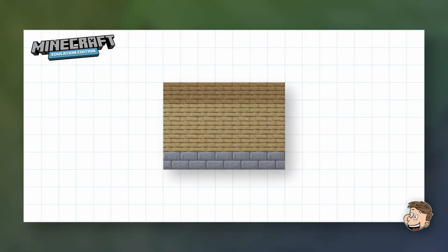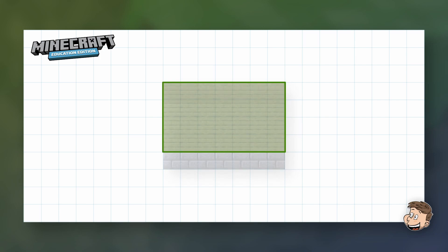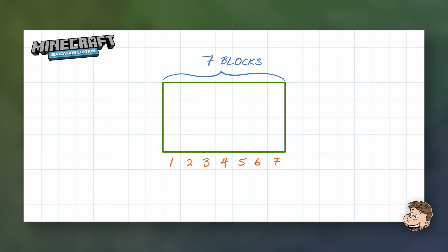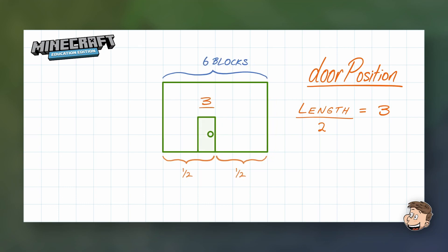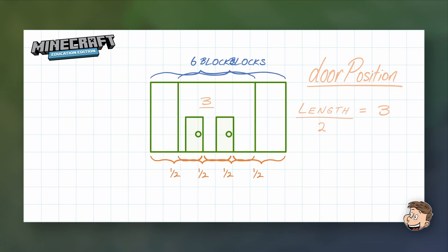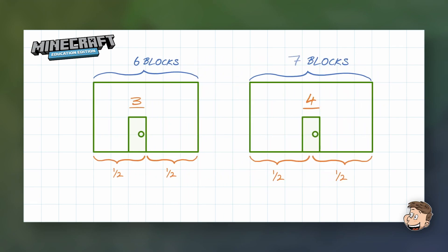On our graph paper we're going to put our front wall and turn that into a rectangle so it's easier to see. If we look at our width, it's seven blocks. If we try and find the middle position for the door, that's the fourth block along. But if we do a sum, half of seven is 3.5. But if we change it to six blocks, we get three. So we're getting a decimal for one and an integer for the other. We need to figure out a way of getting the right position for both of those cases with one algorithm, and that algorithm is to round the length divided by two.